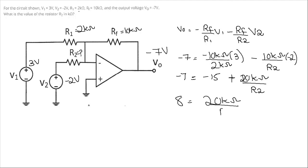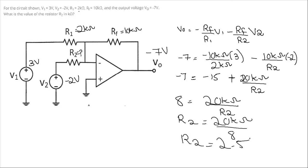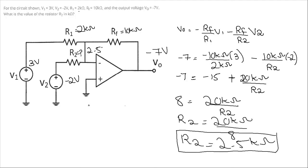Therefore R2 equals 20 kilo-ohm divided by 8, which means R2 is equal to 2.5 kilo-ohm. So the value of resistor R2 is 2.5 kilo-ohm to get an output voltage of minus 7 volts for these input values. Thank you.